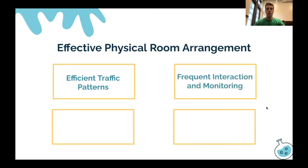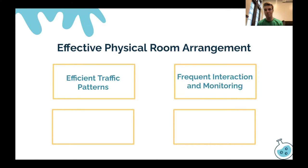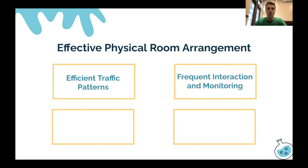Our second consideration is frequent interaction and monitoring — arranging the physical aspects of the classroom to support interaction between students and teachers, and between students and students. When teacher-student interaction increases, a positive adult-student relationship develops, and that's really important as you go along teaching throughout the year.